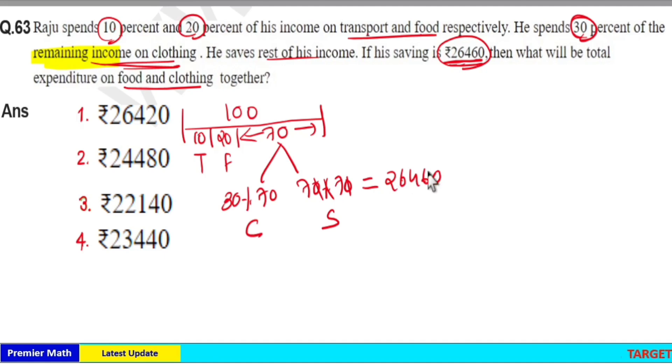Then we have to find expenditure on food and clothing, which is equal to 20 rupees plus 30% of 70. Expenditure on food and clothing is equal to 20 rupees plus 30% of 70. Percentage and double zero cancel, 3 into 7 is 21 rupees, so total 41 rupees.